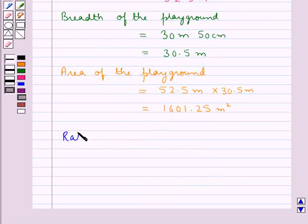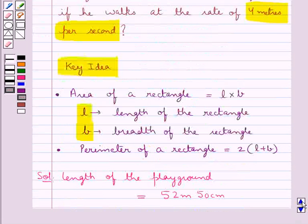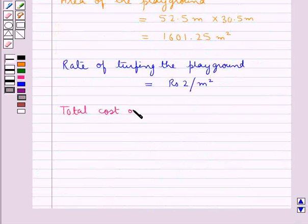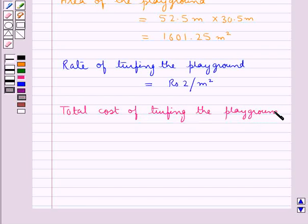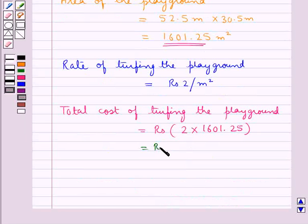It is given that the rate of turfing the playground is equal to rupees 2 per square meter. The total cost of turfing the playground would be equal to rupees 2 multiplied by the area of the playground, which is 1601.25 square meters, and so this would be equal to rupees 3202.50. That is the total cost of turfing the playground.